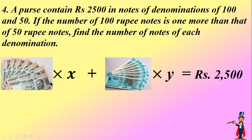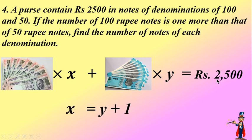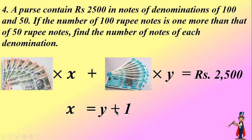We have 100 rupee notes and we don't know how many there are. Similarly, we have 50 rupee notes and we don't know how many there are. But when you add these amounts you will get rupees 2500. The second clue is: the number of 100 rupee notes is one more than that of 50 rupee notes. We assign x for 100 rupee notes and y for 50 rupee notes, so x equals y plus 1, giving us a linear equation with two variables.